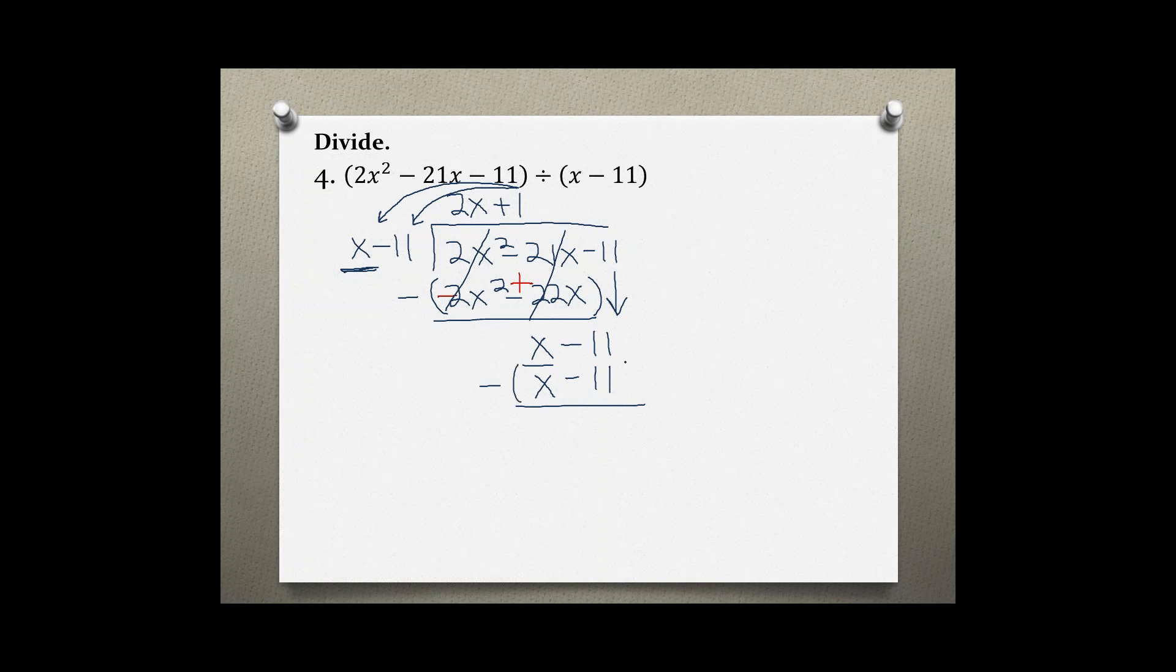Again subtract down which changes the sign and x minus x is 0 and negative 11 plus 11 is 0.